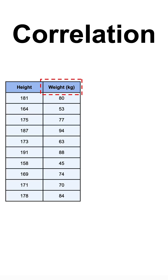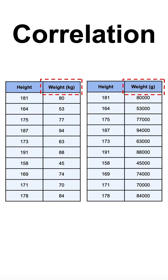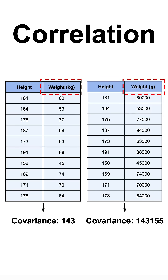For instance, if we calculate the covariance between the height and the weight measured in kilograms, we would get a different value than if we calculated the covariance with the weight measured in grams. However, if we calculated the correlation, we would obtain the same value in both cases.